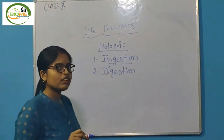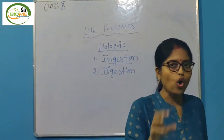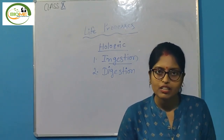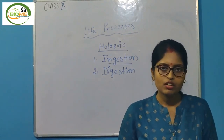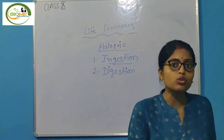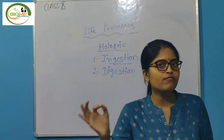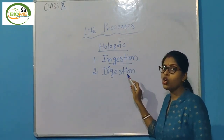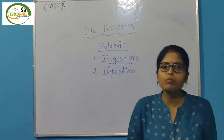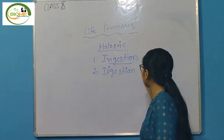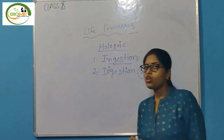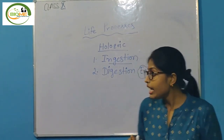Step two is digestion. In holozoic nutrition the organism consumes whole food particles inside its body. This whole food particle is a complex substance, so it must be broken down into a simple absorbable form. By the process of digestion, complex food substances break down into simple absorbable form.